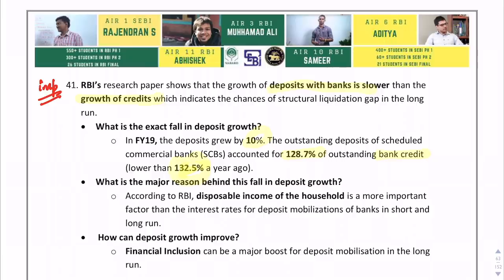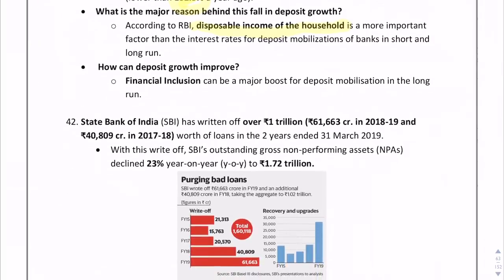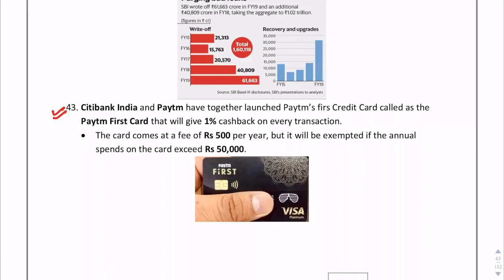The major reason for slower deposit growth is declining disposable income of households, and the solution is financial inclusion. Paytm's first credit card, called Paytm First Card, was jointly launched by Citibank India and Paytm.